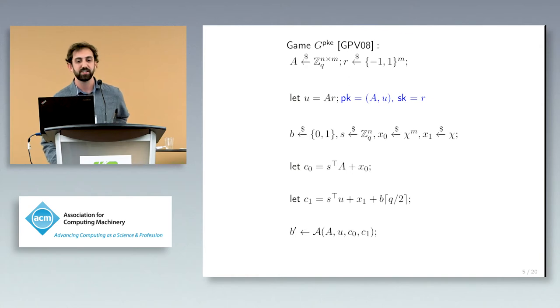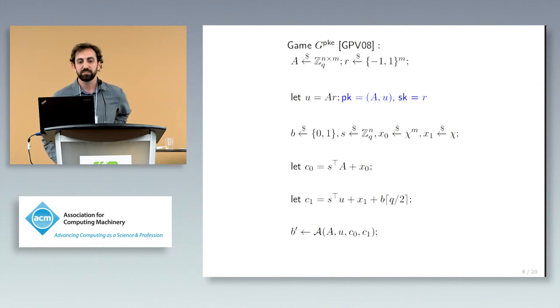Finally, we give the public key along with these noisy inner products to the adversary, who will output a guess bit B prime. Our goal is to prove that the adversary cannot guess the value of B with probability much better than one half. To prove security, we want to apply the LWE assumption to this collection of noisy inner products in C0 and C1. We cannot do this directly, however, because there is a hidden correlation between one of the columns U and the rest of the matrix A. This is why decryption works.